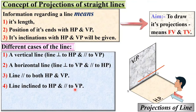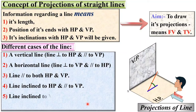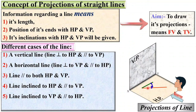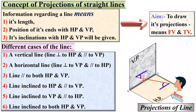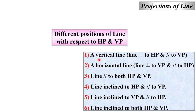Next, a line inclined to HP and parallel to VP — here you can see it is parallel to VP but inclined to HP. Next, a line inclined to VP and parallel to HP. And the last case: a line inclined to both VP and HP. Now let us see one by one all these cases.